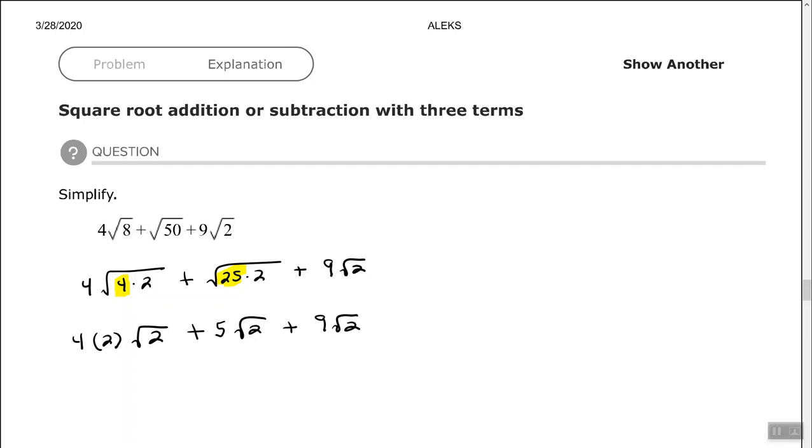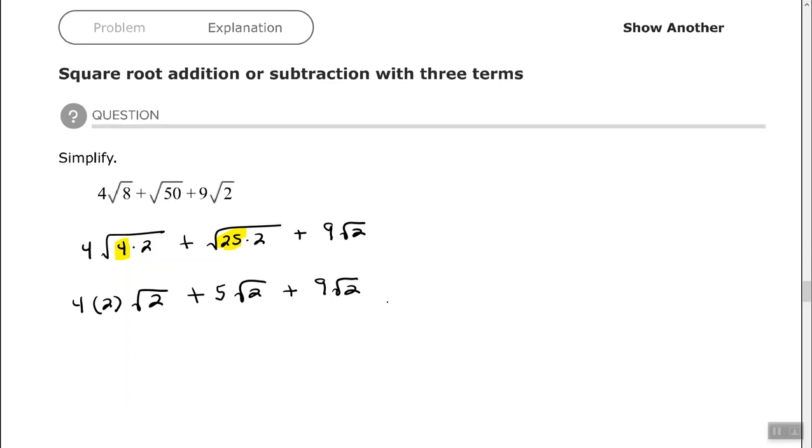Alright, again, so all three of those terms have the square root of 2 as a factor, so I can say 8 plus 5 plus 9 times the square root of 2.